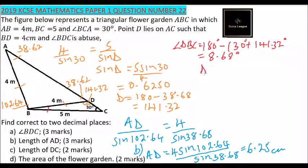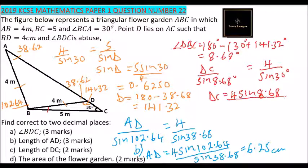We can use this angle to get DC. We say DC divided by sine 8.68 equals 4 divided by sine 30. DC equals 4 times sine 8.68 divided by sine 30. Using your calculator, you will get DC is 1.21 cm. That is how you answer part C.